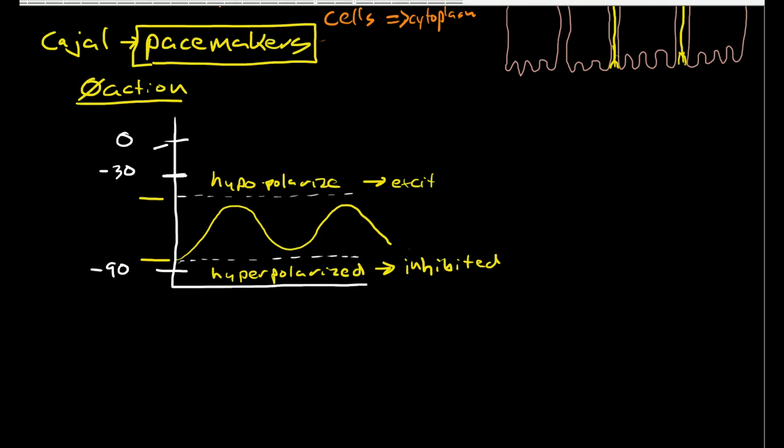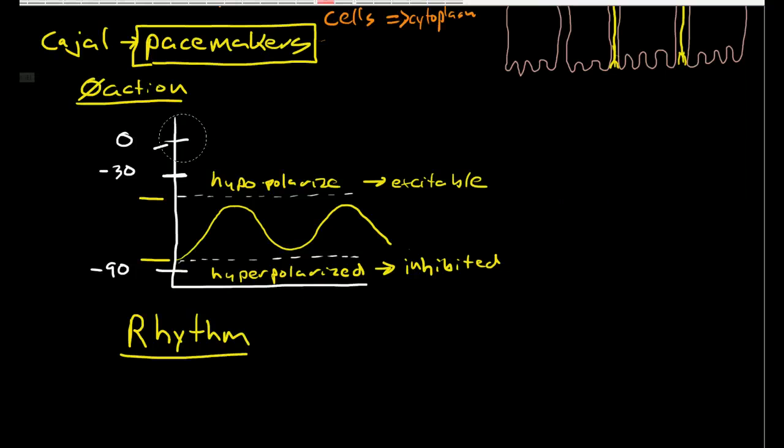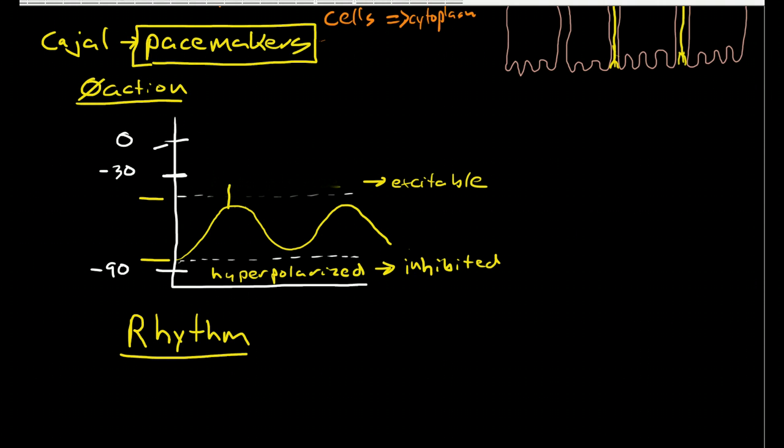This slow wave pattern sets up an underlying rhythm so that when we have something that is exciting the cells, they will be more likely to have initiated action potentials here because it's easier to get above threshold.